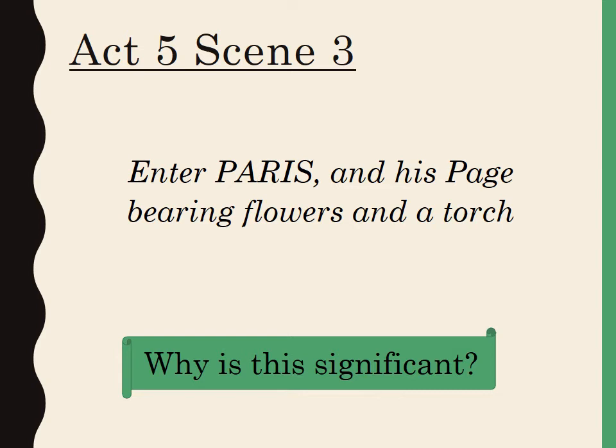Moving on to Act 5, Scene 3, when Paris goes to visit Juliet — whom he assumes is dead in her vault — we have the stage direction: 'Enter Paris and his page bearing flowers and a torch.' The key detail is that Paris is bearing flowers. Flowers often symbolise love, so we're left with the question: did Paris actually truly love Juliet? Throughout the play we have the famous love story, but there are little clues that perhaps Paris loved Juliet too.